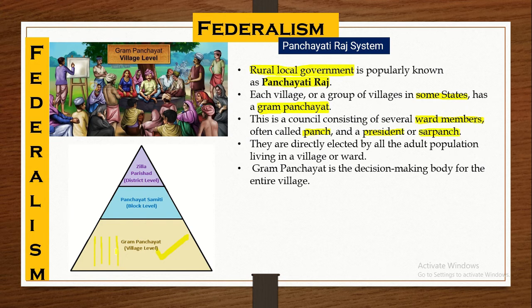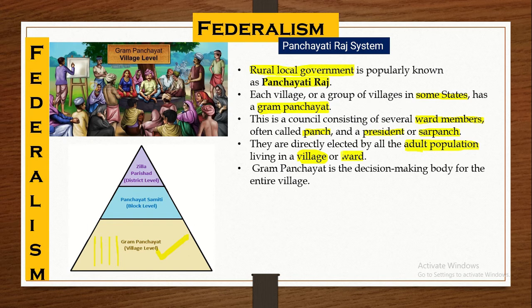Each village is divided into wards. Each ward will have a ward member, and among themselves they elect a president, also called Sarpanch. These people are directly elected by the adult population, that is those above 18 years of age, who are living in that particular ward. Each ward holds elections and the adult population living in that ward chooses their own ward member, called Panch.